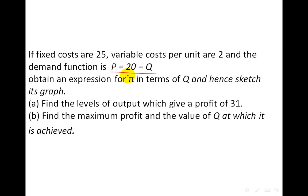obtain an expression for π, which means profit, in terms of quantity and sketch its graph. Find the levels of output which gives a profit of 31, find the maximum profit and the value of Q at which it is achieved.